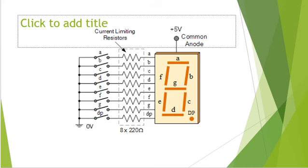These displays are usually driven by a special type of integrated circuit, commonly known as a 7-segment decoder or driver. An example is the CMOS 4511, which is a binary-coded decimal (BCD) to 7-segment display decoder. It is able to drive both the common anode type and the common cathode type.